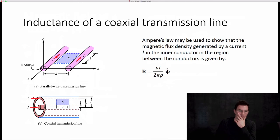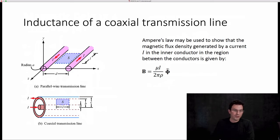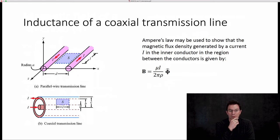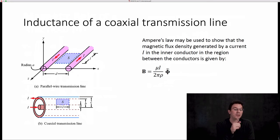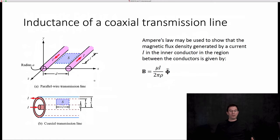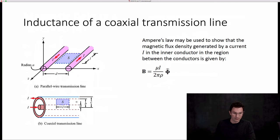Let's look at another problem: the inductance of a coaxial transmission line — the run-of-the-mill coax you may have in your house carrying cable. We'd like to know, if we have an inner conductor carrying a current I and an outer conductor carrying a current minus I, what is the inductance per unit length of this coaxial transmission line? The first step is to figure out what the magnetic field is in the relevant region — between the conductors, from rho equals A to rho equals B.